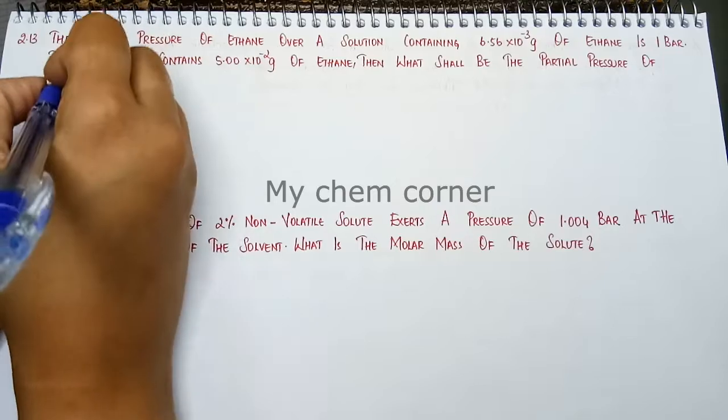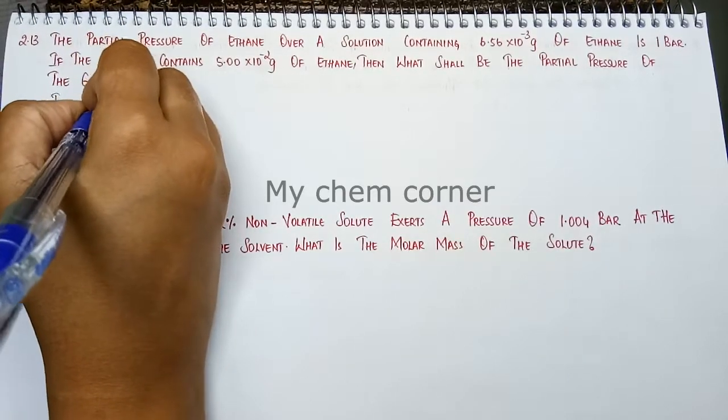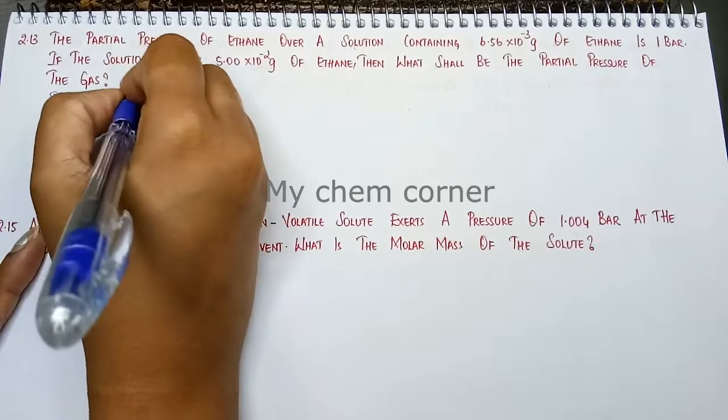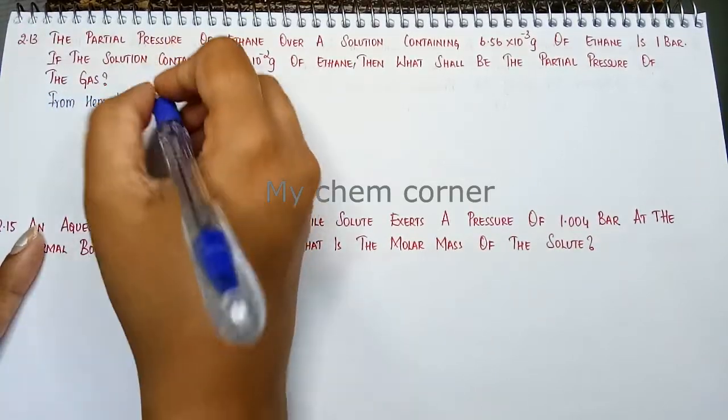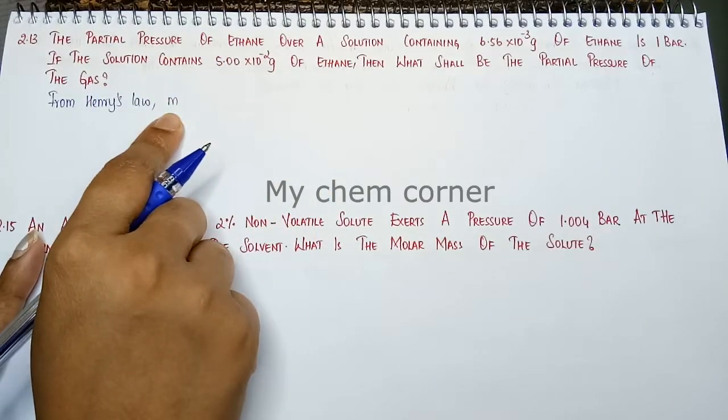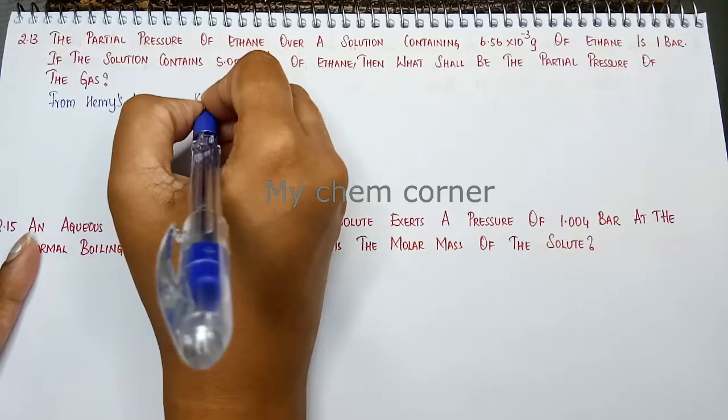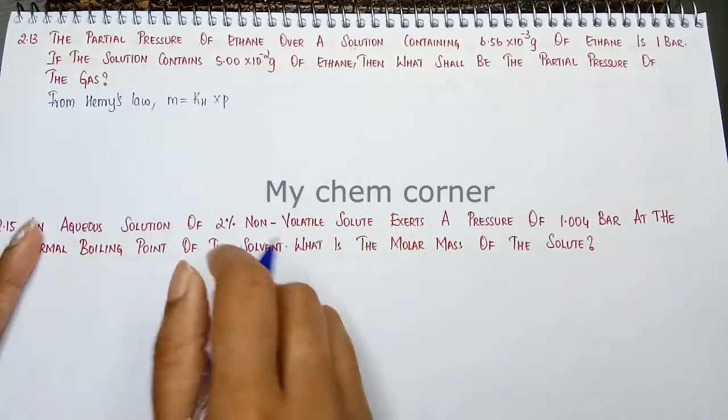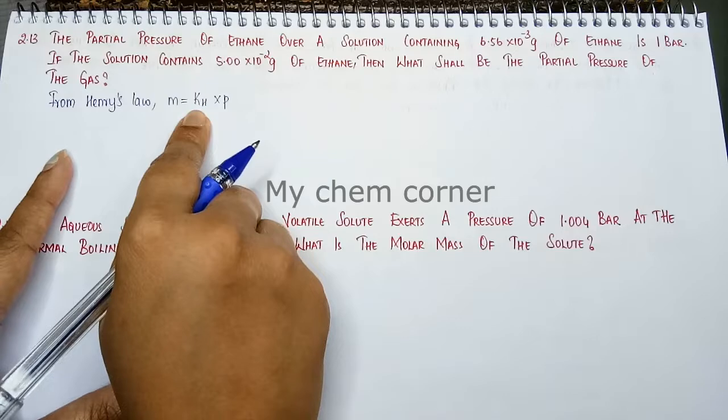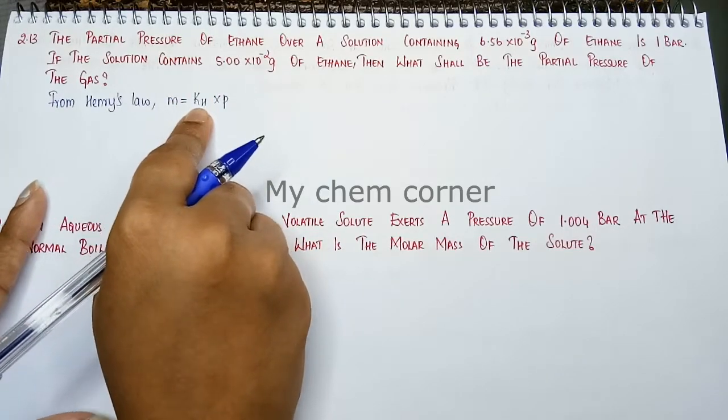We can write from Henry's law, mass of the gas dissolved in unit volume of solvent is directly proportional to partial pressure of gas. To remove the proportional sign, you will put the Henry's constant there.